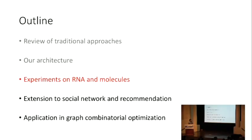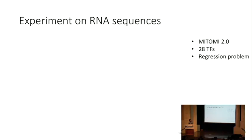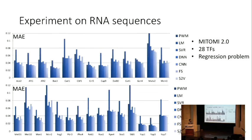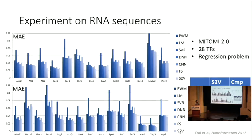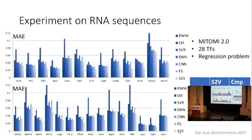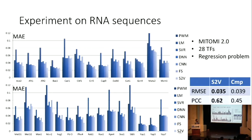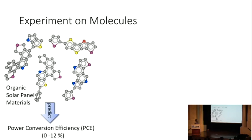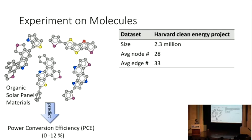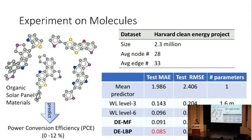We did some experiment on the RNA sequences and molecules. For example, this is one type of regression problem, and comparing to the second best baseline, which is the string kernel or the simple deep neural network or deep convolution network, we gain much better performance regarding the regression loss. For the molecule case, this is one application used for screening the organic solar panel materials. The data is taken from the famous Harvard Clean Energy Project, which contains 2.3 million molecules. And again, we can get a much better regression loss.